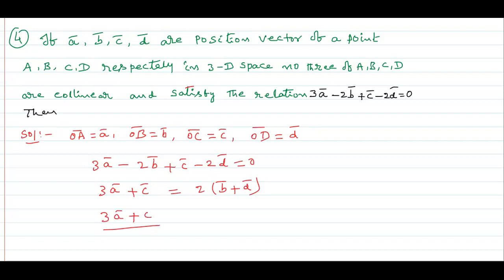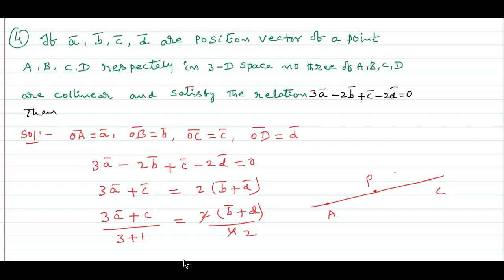Writing 3 plus 1 equals 4 here, and 2 into B plus D by 4. That means 2 by 4. See that — this is one line with point A here and point C here. Suppose P divides AC in the ratio 3 is to 1 — or 1 is to 3. Using the section formula with A bar as small a and B bar as small b: 1B plus 3a divided by 3 plus 1, or 1 plus 3. Same like that — another one because this is the point of intersection.